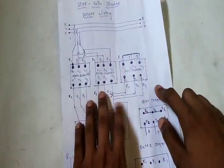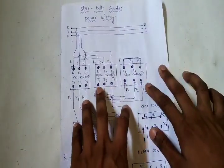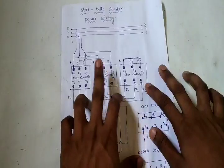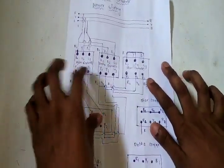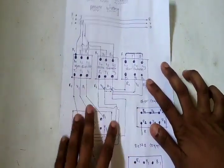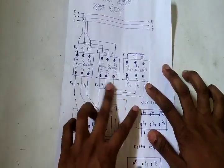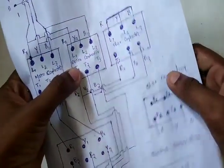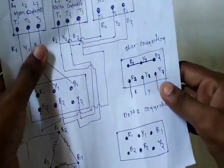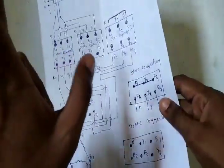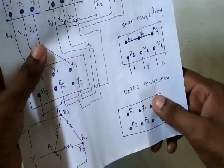So in general, we have 3 contactors: main contactor, delta contactor, and star contactor. Star contactor is first, and we have 2 connections — one star and one delta.